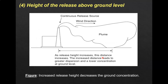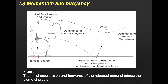The fourth parameter is the height of release (hr) above ground level. This is the point of your continuous release. After height of release, we look at the fifth parameter — momentum and buoyancy. These will determine and affect your plume characteristics, including how the dominance of internal buoyancy and turbulence will determine the path and direction of your dispersion.